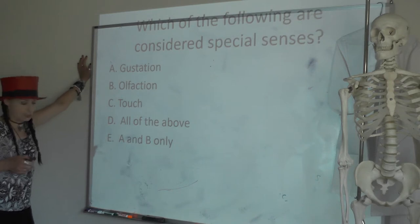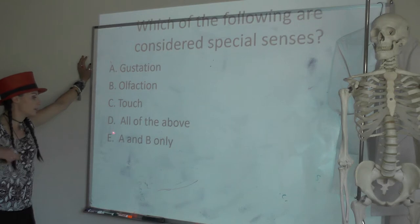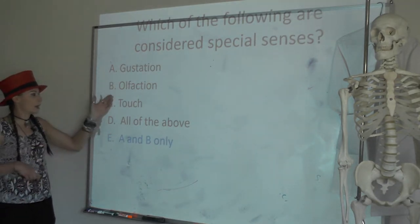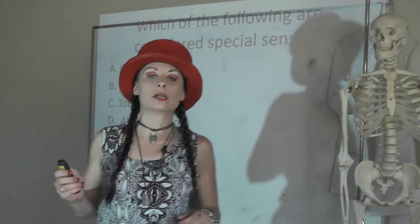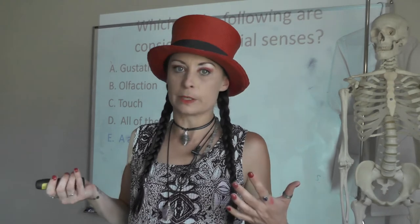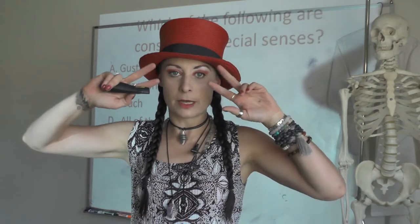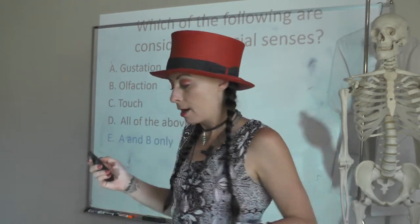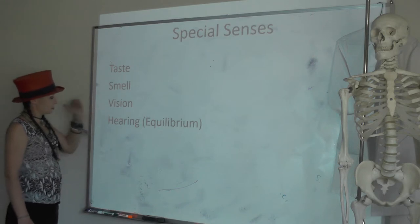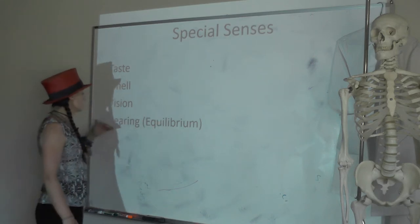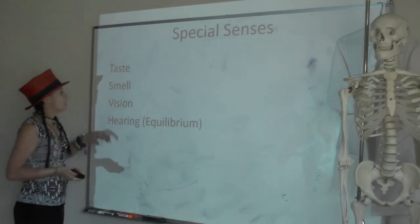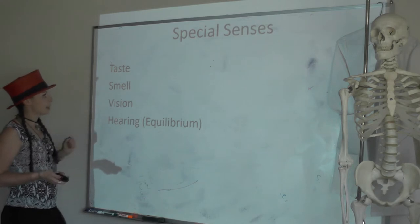Which of the following are considered special senses? A, gustation; B, olfaction; C, touch; D, all of the above; E, A and B only. A and B only — touch is a general sense. Our special senses are taste (gustation), smell (olfaction), vision, and hearing and equilibrium. We'll look at olfaction and gustation today, and vision and hearing next class to wrap up everything for your next exam.